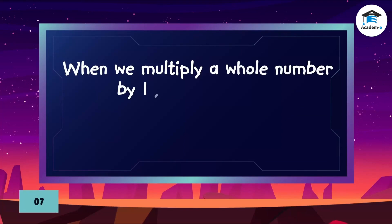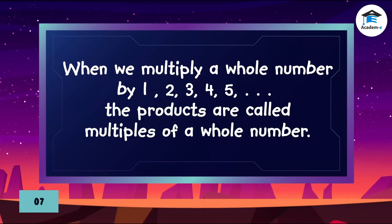When we multiply a whole number by 1, 2, 3, 4, 5, and so on, the products are called multiples of a whole number.